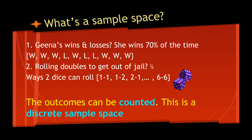So let's ask the question: what is a sample space? We have two examples here of discrete sample spaces. The first is where Gina's wins and losses are counted — she wins seventy percent of the time. You've got a sample space of ten games and you find seven W's for Gina, that's seven wins. The second example is the rolling of doubles to get out of jail — you could create all thirty-six possibilities and count how many ways two dice roll the same numbers. Since these outcomes can be counted, we call them part of a discrete sample space.